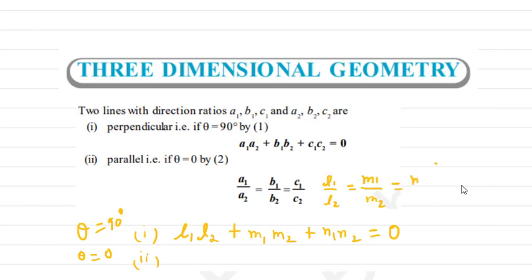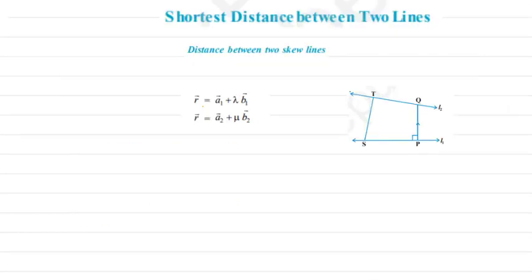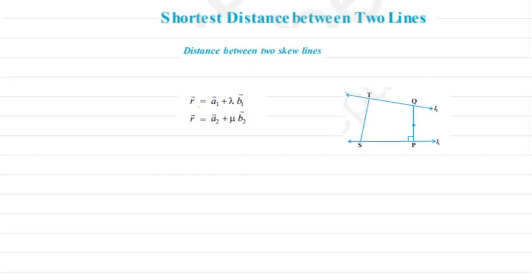The next very important topic is the shortest distance between two lines. The two lines can be parallel or non-parallel, and in both cases you can find the shortest distance. First, let's see the case of skew lines. Skew lines means non-parallel, non-intersecting lines.